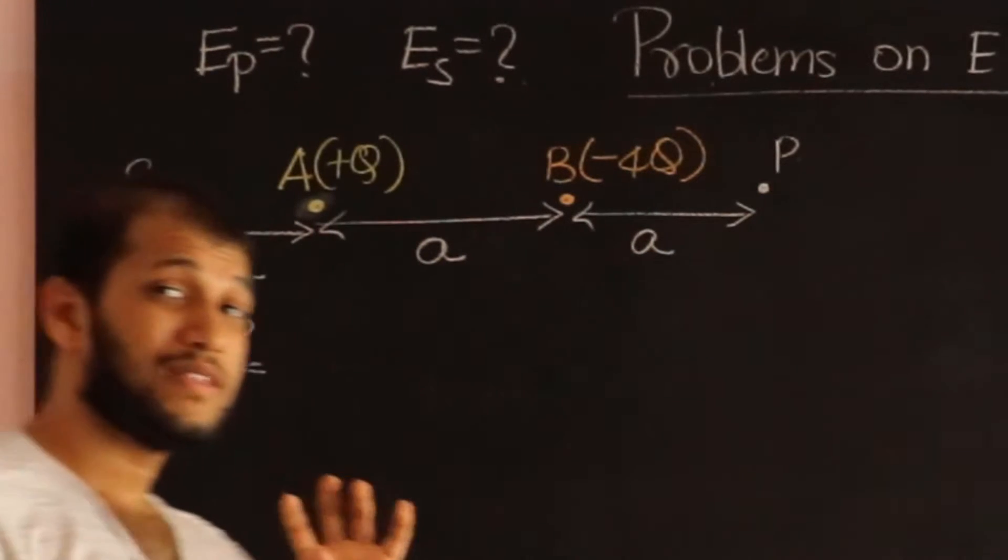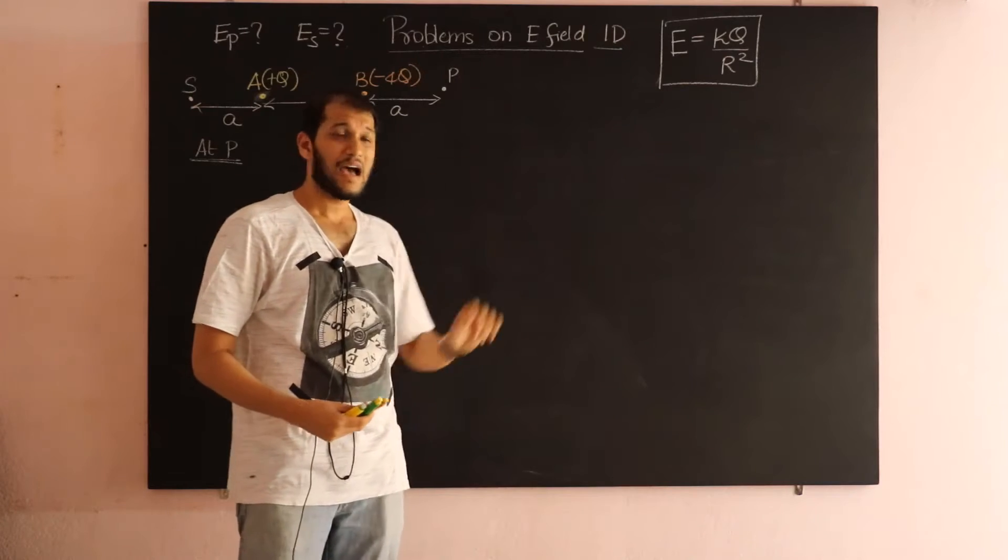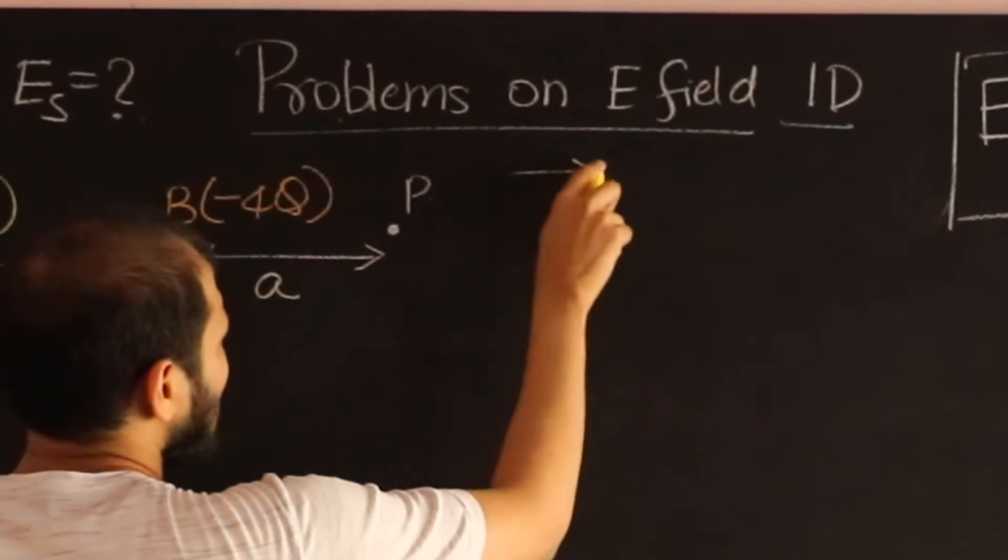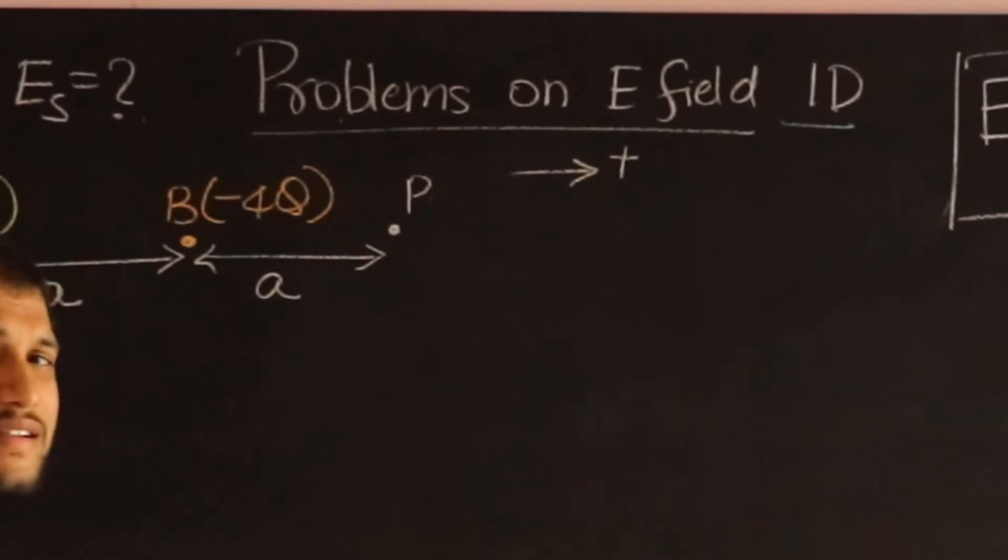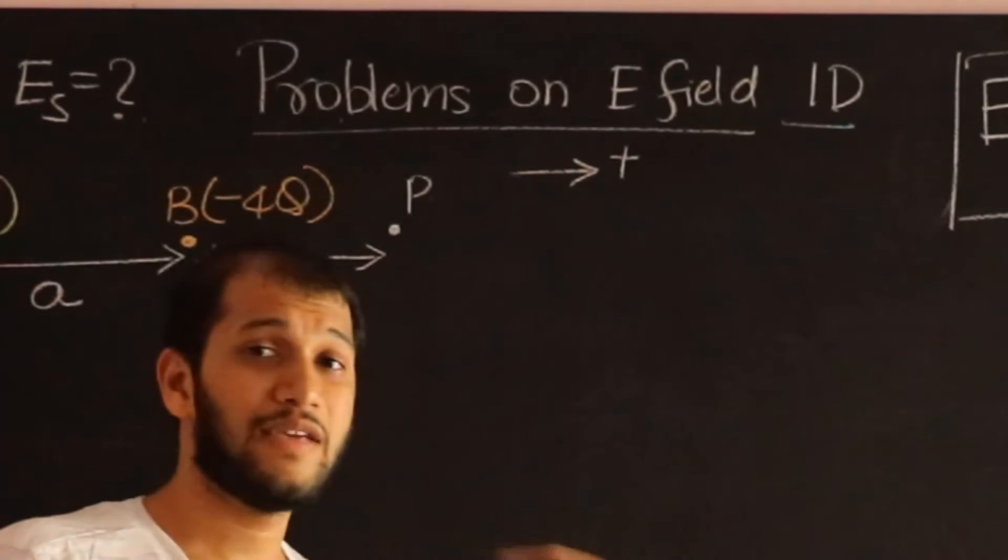I will tell you a general method which I like to use when we are dealing with lots of directions. I like to consider one direction as positive. So let me choose, in this example, right direction as positive. So if there is an electric field towards the right, I will call that as positive, and electric field towards the left, I will give it a negative sign.